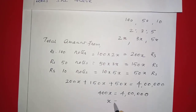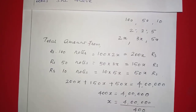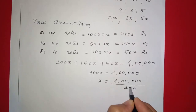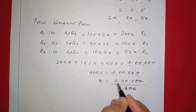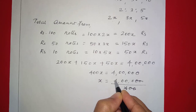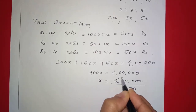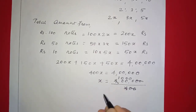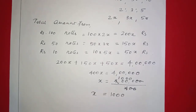x equals 4 lakhs divided by 400. Cancelling zeros: 4 into 4000 divides to give 1000. So x is equal to 1000.